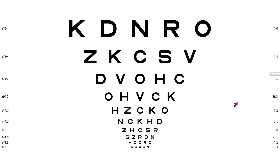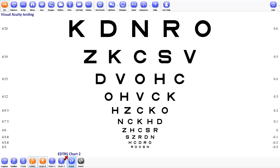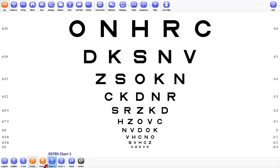If you are doing any research, it's also essential to specify which chart was used when quoting VA values — in other words, chart R, chart 1, or chart 2. That is fairly straightforward.